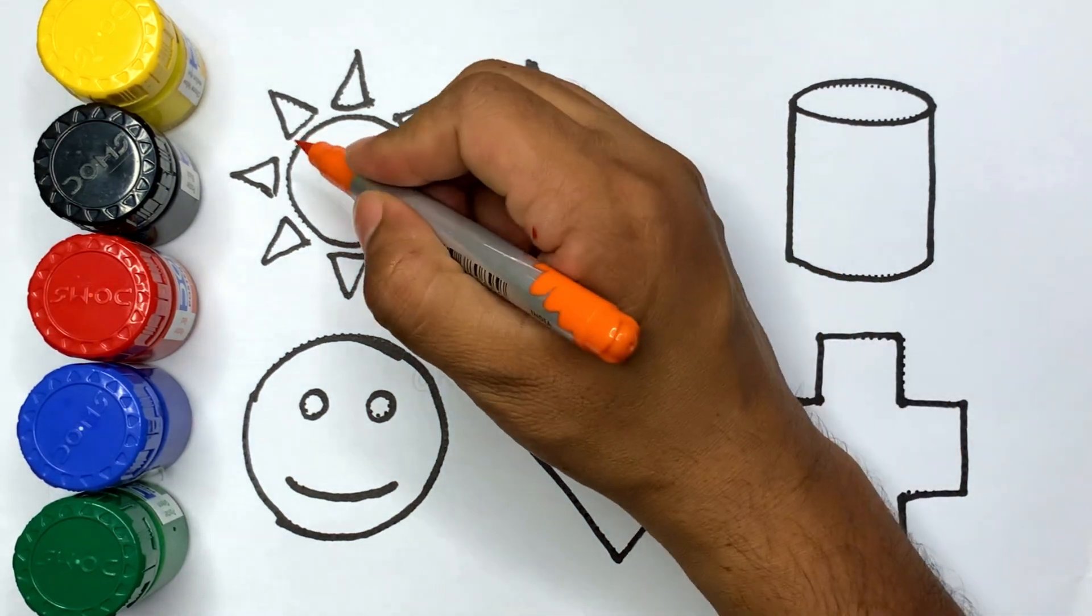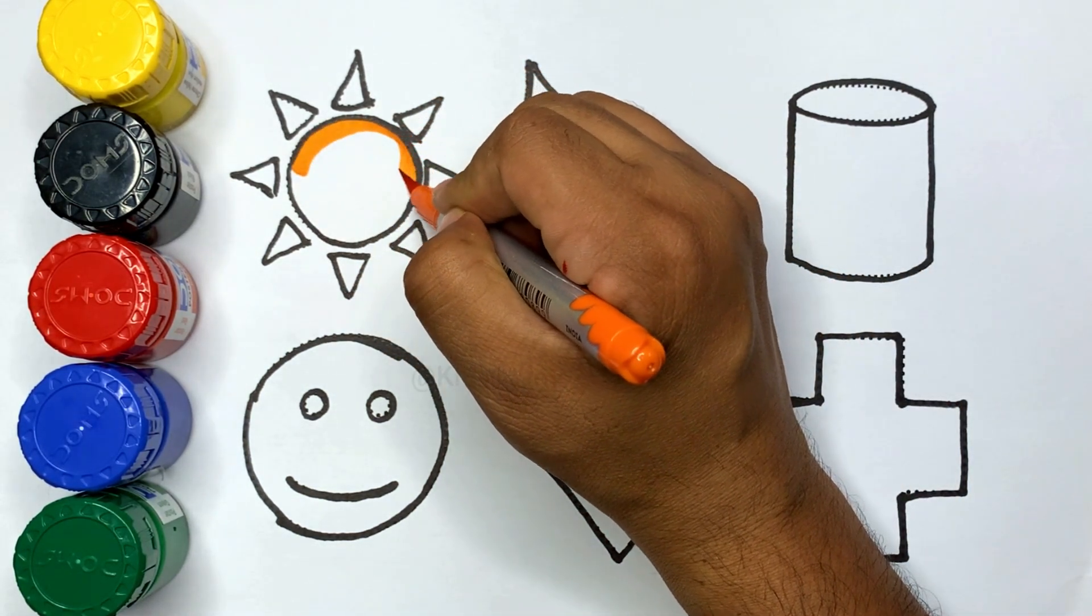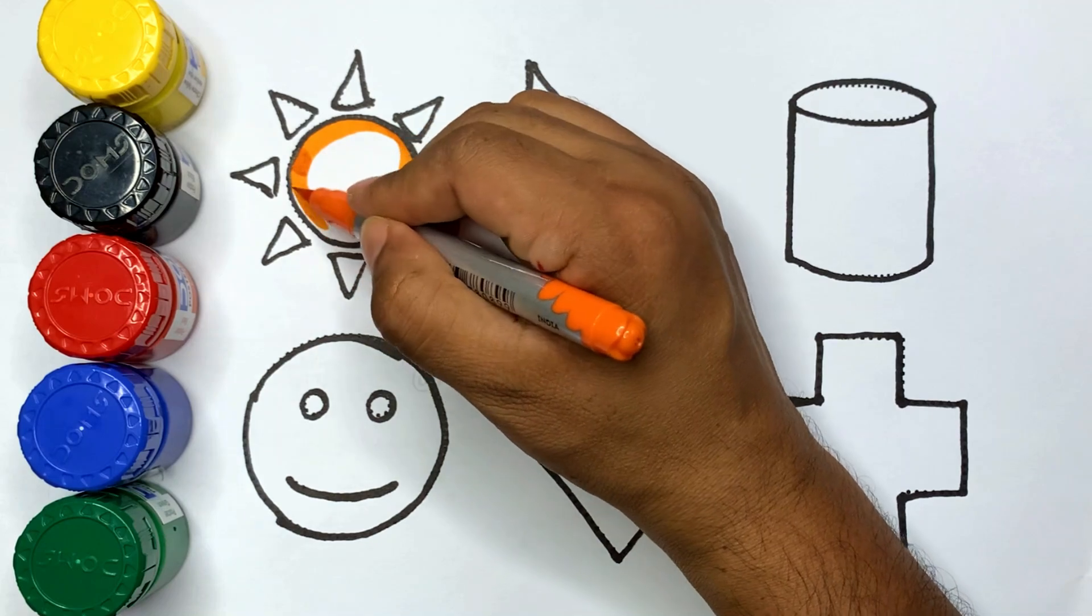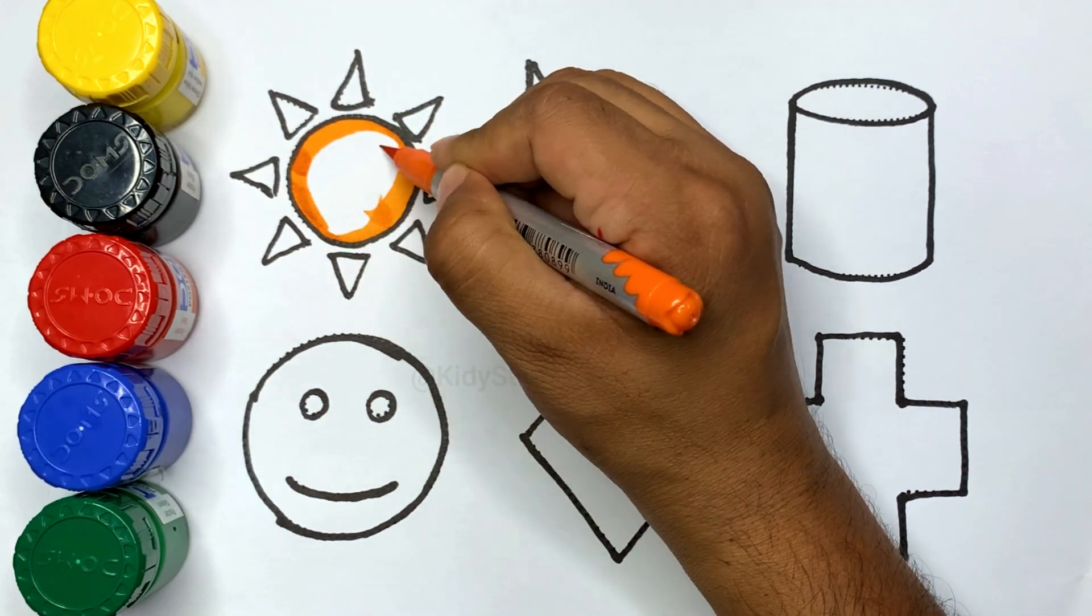Orange color. कौन सा shape है kids? Here is sun.